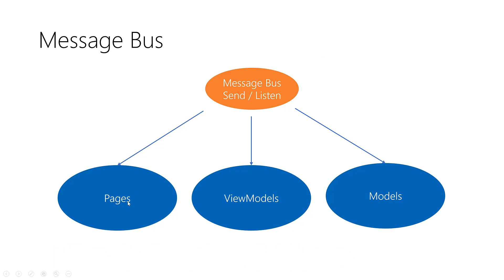So here we have Pages, ViewModels, and Models. MessageBus allows you to send messages of any type between these components — maybe from Pages to ViewModels, between ViewModels, Models, whatever. In general, between two classes inside your project, because MessageBus is a general object that's defined when you start the application.